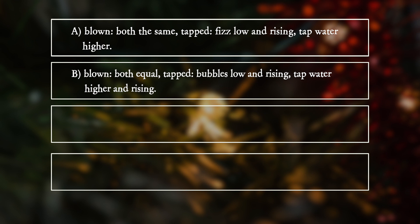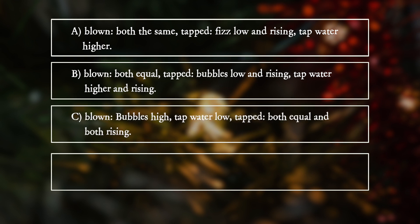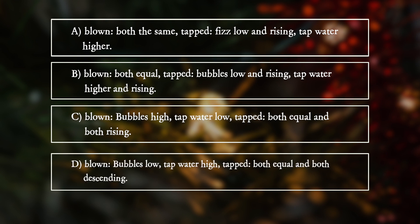C: blown — bubbles high, tap water low; tapped — both equal and rising. D: blown — bubbles low, tap water high; tapped — both equal and descending.